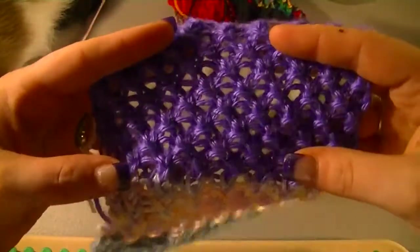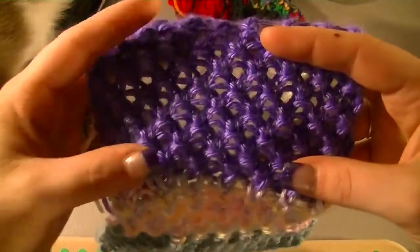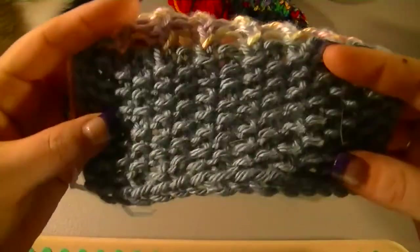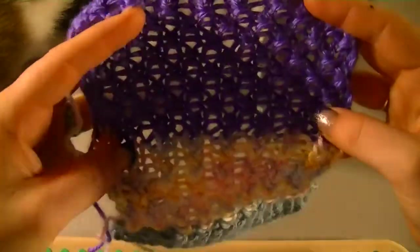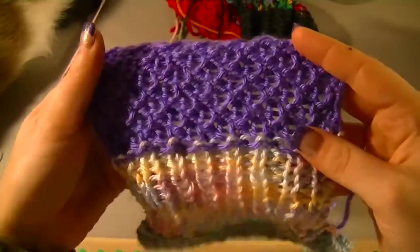This is the double moss or sometimes referred to as double seed stitch. Now this is just a regular moss stitch or seed stitch, and this is the double. It's the front and this is what the back looks like.